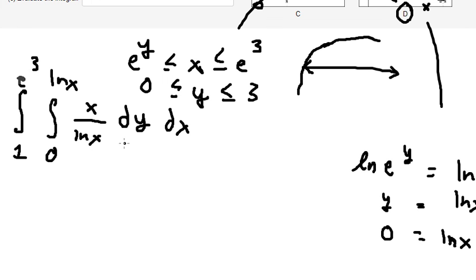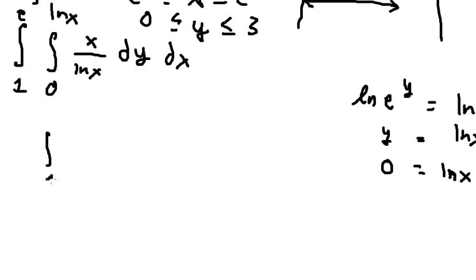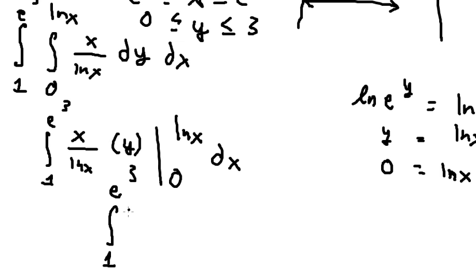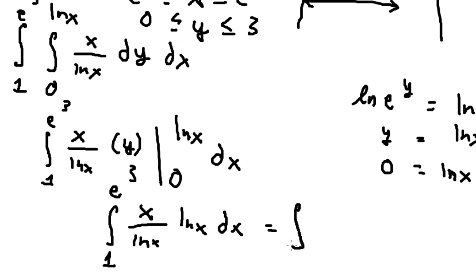Setting up the new integral with the swapped order of integration, the integration of dy gives us y evaluated with the bounds: upper bound is ln(x) and lower bound is 0. Substituting those bounds in and simplifying gives us the final answer.